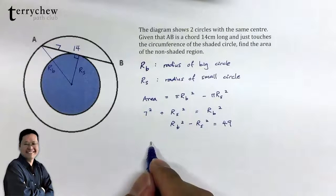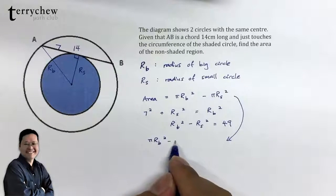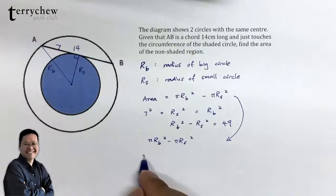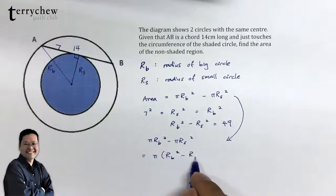So the area that we are looking for, if we continue from above, we have pi times the quantity RB squared minus RS squared. But this quantity RB squared minus RS squared we have just found to be 49. So the answer is 49 pi.